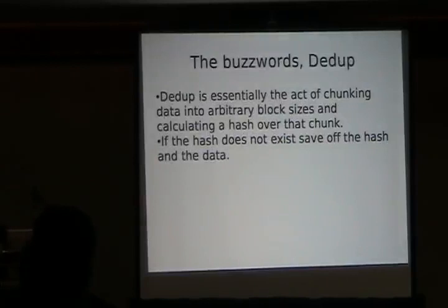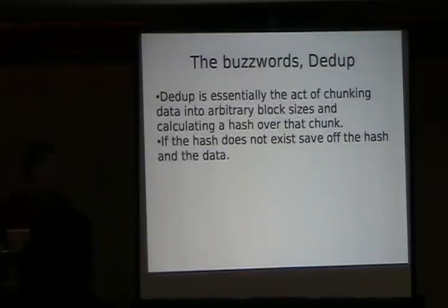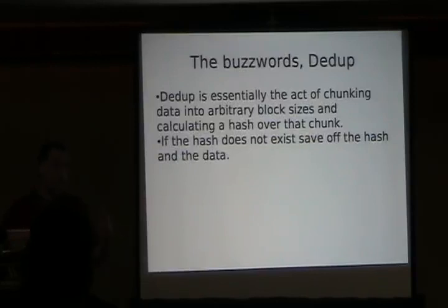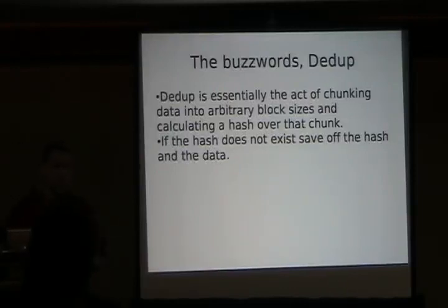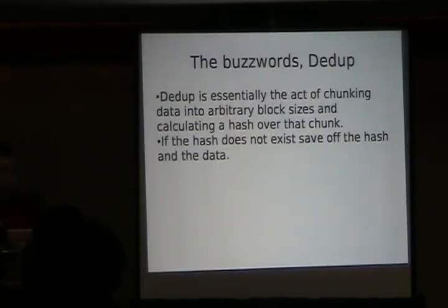DDeDup is basically what Epitome actually does. It's nothing more than a streamer that retrieves a file, chunks it up into variable or fixed sizes, and for all of those chunks it generates a hash. Then it validates if the hash exists or not. If it doesn't exist, it needs to be saved off to a back end. If it does exist, then it knows it doesn't need to save it again, so it won't.